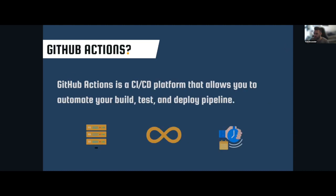GitHub Actions is a CI/CD platform integrated into GitHub. It's supposed to give you a solution to build, test, and deploy your code. The good thing about it is that it lets end users — people who are not able to set up a whole Jenkins at home or a whole CI solution — do it inside their own repositories without worrying about external things like servers and costs.